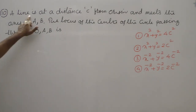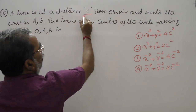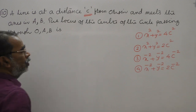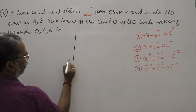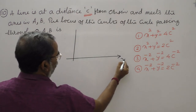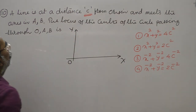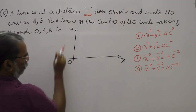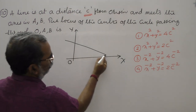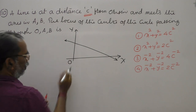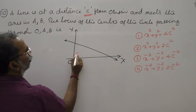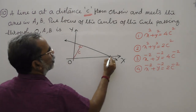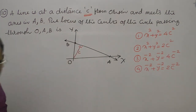Question number ten: a line is at a distance of c from the origin and meets the coordinate axes at A and B. A line like this has perpendicular distance c from origin. It meets the x-axis at A and y-axis at B. The locus of the center of the circle passing through O, A, B is asked. Since the x-axis and y-axis are perpendicular, angle AOB is 90 degrees, making AB a diameter of the circumcircle. The center is the midpoint of AB.